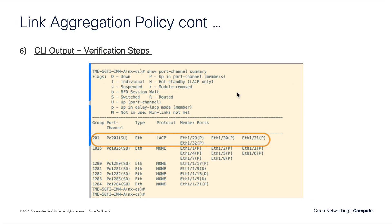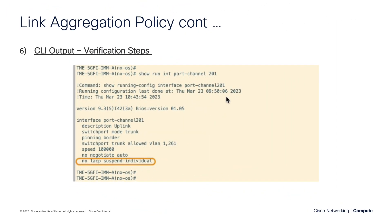For CLI output verification, you can SSH into the fabric interconnect, connect to NXOS, and do a show port channel summary. That's going to tell you if that port channel is configured for LACP. If you want additional detail, you can do a show run interface port channel and the number. You can see more details about that port channel — in this case, via the policy, that we have no LACP suspend on individual member ports. That was directly a function of the aggregation policy pushed down as part of the port policy and ultimately the domain profile.